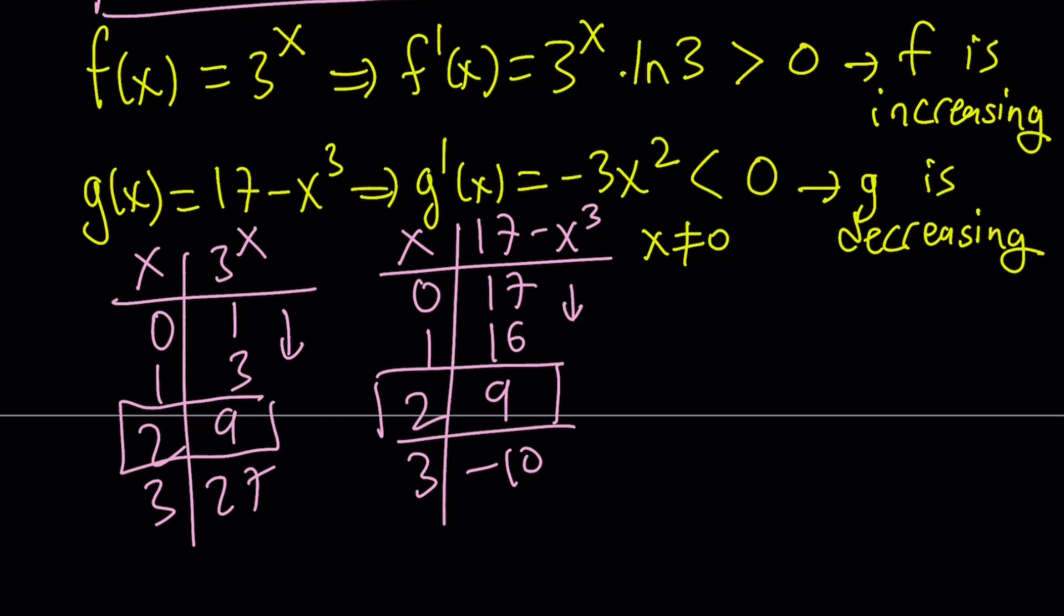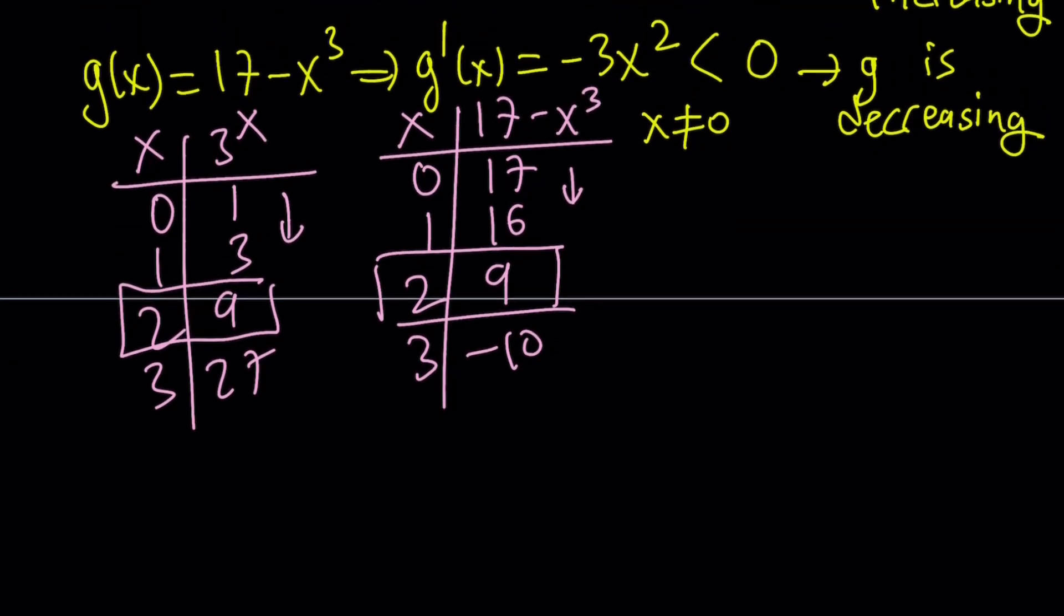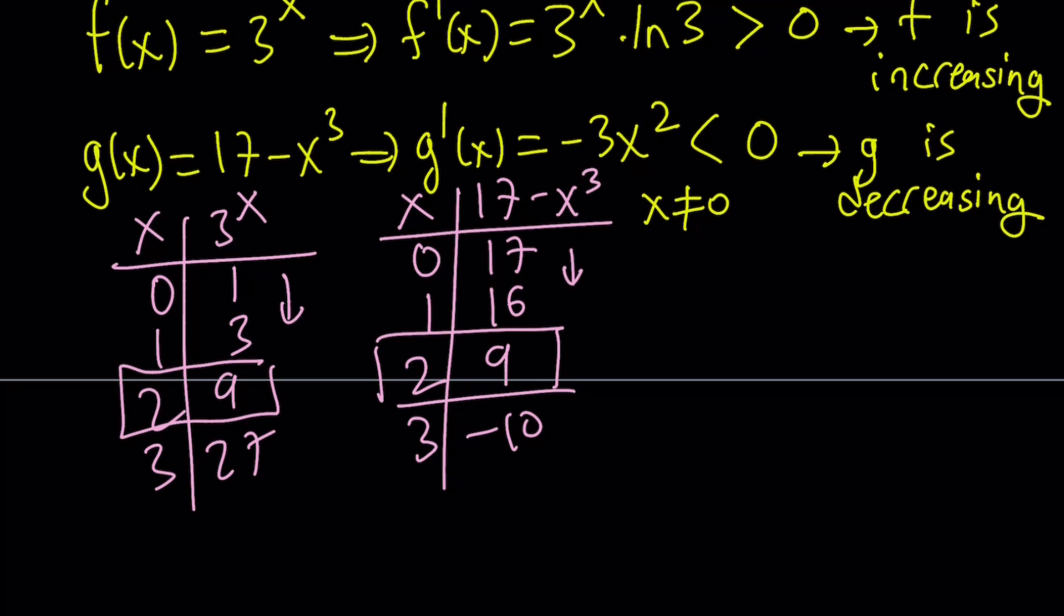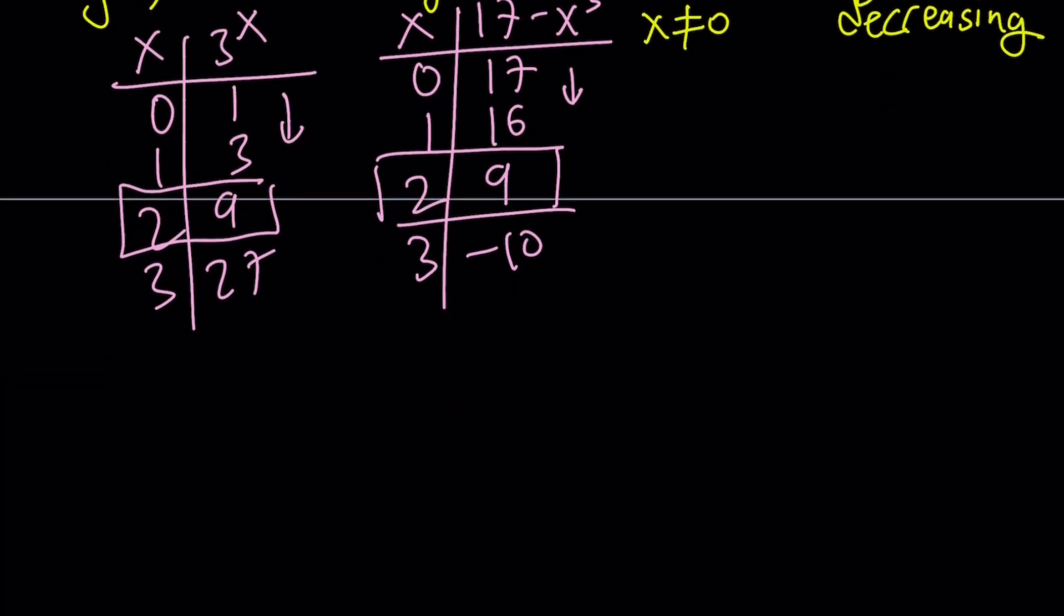So it's kind of like guess and check. I know it's not like algebraic, but there's nothing you can do because this is non-standard. But it's easy to guess on a certain interval. So x equals 2 is the only solution. There's no other solution because one function is increasing and the other one is decreasing.